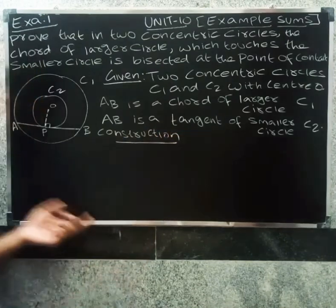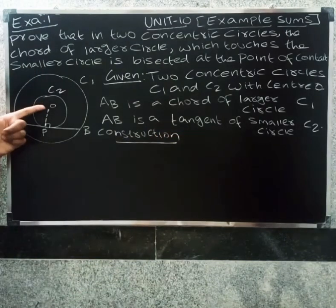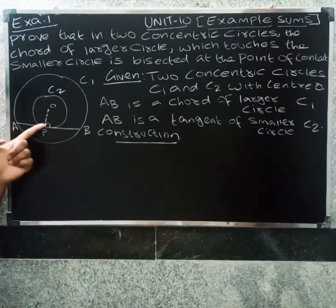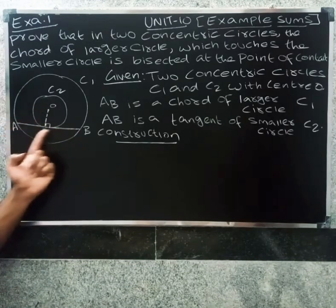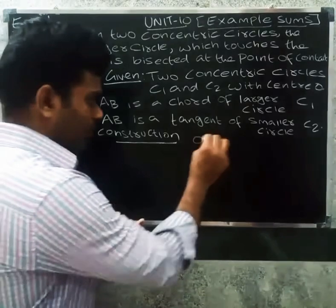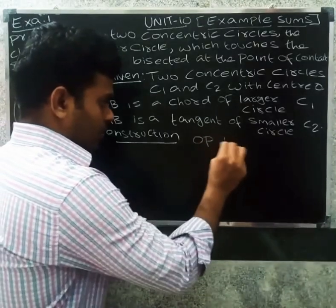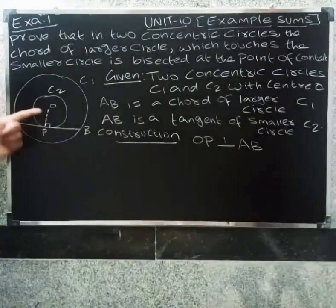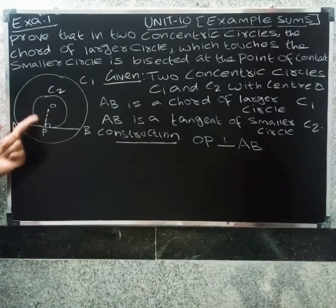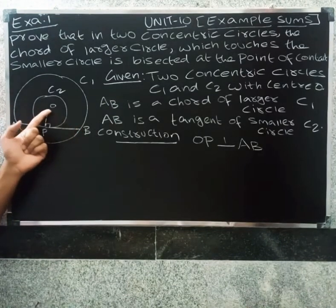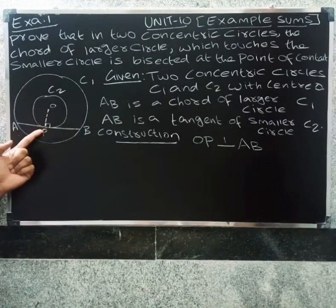Construction: Draw OP perpendicular to AB. The radius is perpendicular to the tangent at the point of contact. So OP is perpendicular to AB.